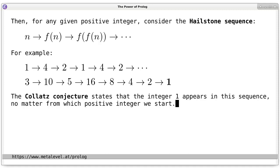And the Collatz conjecture states that no matter from which positive integer you start, you always eventually arrive at this cycle. In other words, you always reach 1, no matter from where you start. So, let's study this conjecture in Prolog.